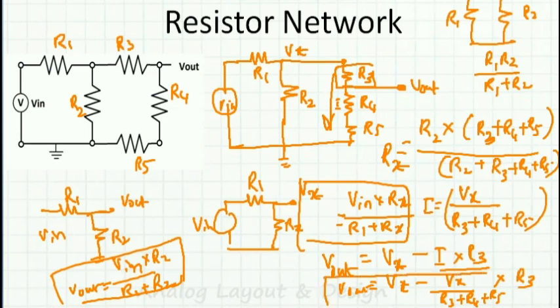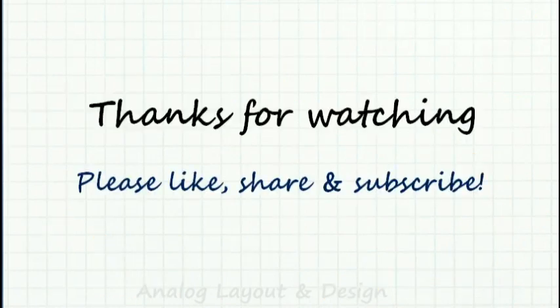That is Vout. We simplified a big resistor network into a smaller one by identifying series and parallel combinations and then arrived at the final equation. I hope you liked the video. Please hit the like button, share, and subscribe. Thanks for watching.